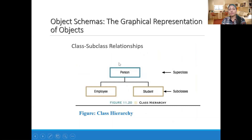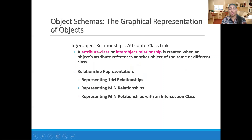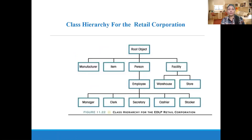Now, regarding the object schema and the superclass-subclass relationship: Person is a superclass, further categorized into two subclasses — Employee and Student. The class hierarchy shows a root class divided into classes like Manufacturer, Item, Person, and Facility. A Person can be further divided into Employee, and employees can be of different kinds: Manager, Clerk, Secretary, Cashier, and Stocker.